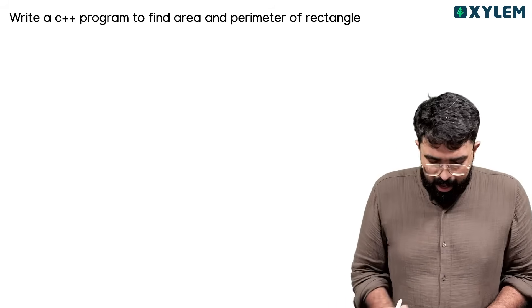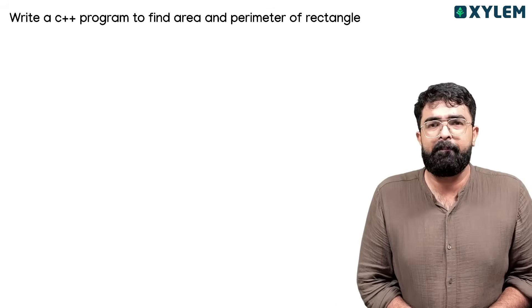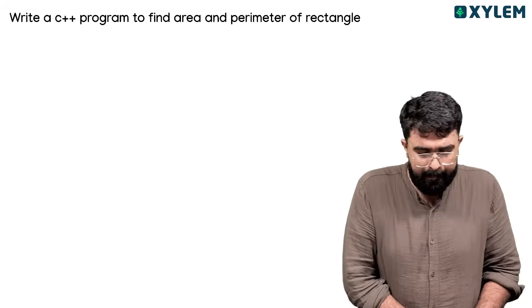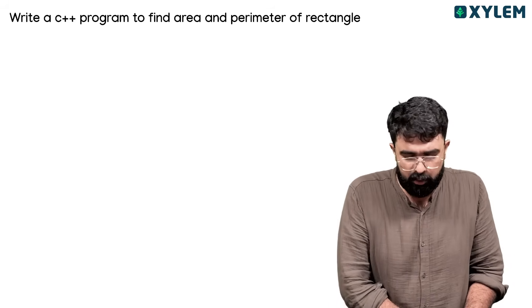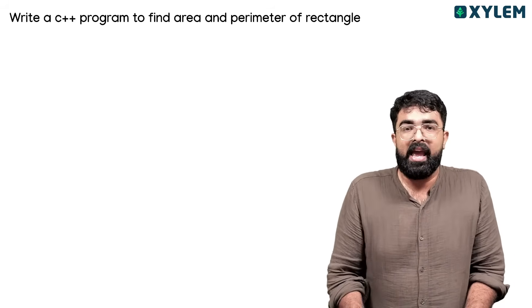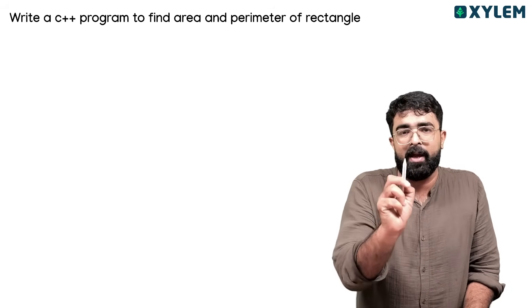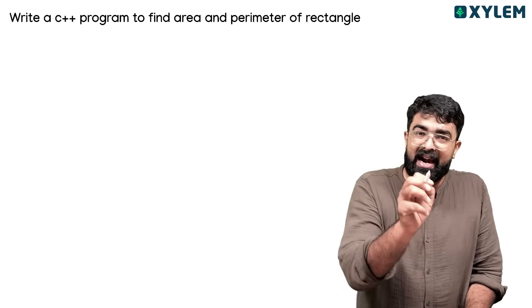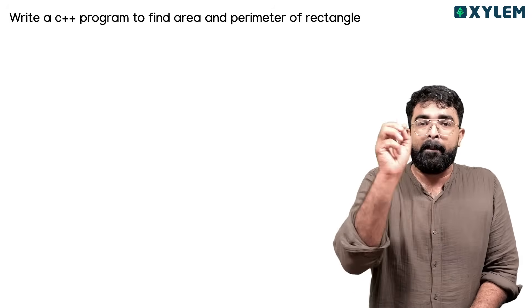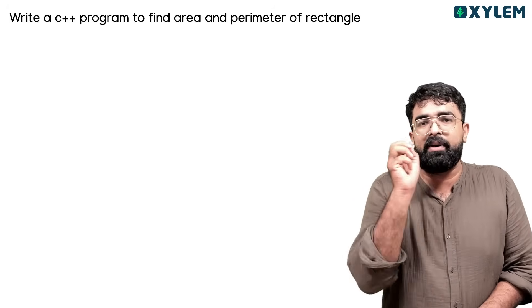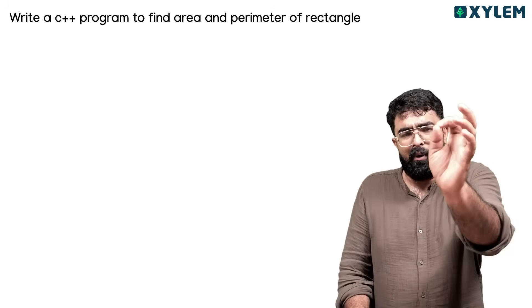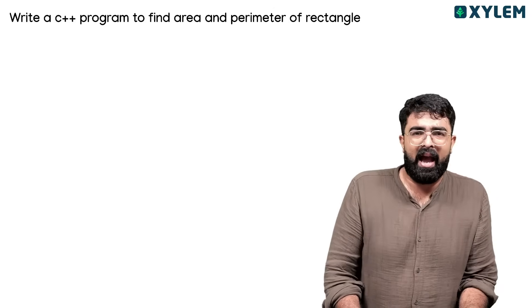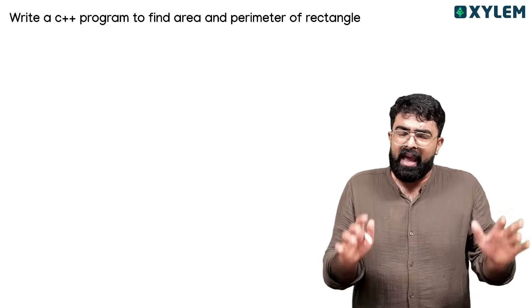Okay, first question: write a C++ program to find the area and perimeter of a rectangle. One rectangle, area and perimeter — that one program to write.